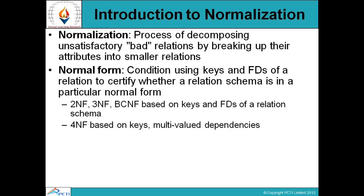Normal form is a condition using keys and functional dependencies of a relation to certify whether a relation schema is in a particular normal form. The levels are first normal form, second, third, BCNF, and 4NF, which is based on the key and multi-valued dependencies. In this session we are going to cover first, second, third, and BCNF; the rest will be covered in the next session.